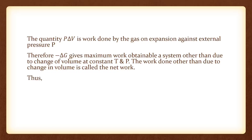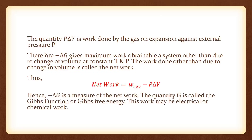This work is called net work, and net work equals W minus P delta V. Delta G is a measure of net work. If delta G is negative, the process is spontaneous; if delta G is positive, the process is non-spontaneous. This function G is called the Gibbs function or Gibbs free energy. This net work may be electrical work or chemical work, but cannot be pressure-volume type of work.